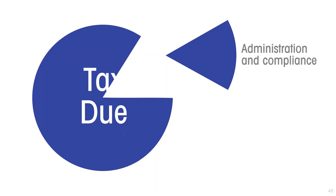The administrative cost is incurred by the tax administration, because it has to pay for the personnel, the office rent, and the supplies and services it uses to administer the tax.